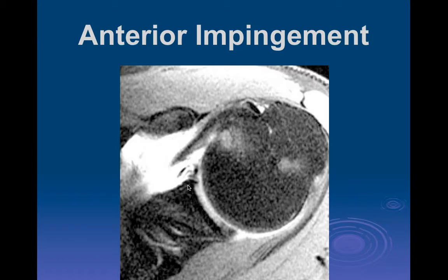This is a patient who had symptomatic coracoid impingement. What I like to look for now for coracoid impingement is not numbers, but physiologic changes that might correlate with abnormal biomechanics. I like to make the measurement - if it's a centimeter or less I'm concerned - but I really like to see marrow edema in the adjacent lesser tuberosity.